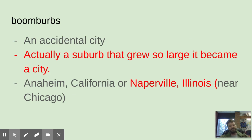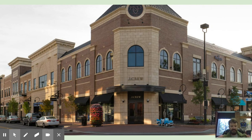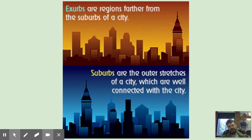A boomburb is an accidental city — a suburb that grew so large it became a city even though that wasn't anticipated. Anaheim, California is a good example — that's where Disneyland is, right outside LA, and it didn't start that way. Naperville, Illinois is another example with a downtown that has all the restaurants you'd find in Chicago. Exurbs are regions farther away than the suburbs — well connected, but it'll take longer to get there and you probably won't have light rail connecting you to the urban core.